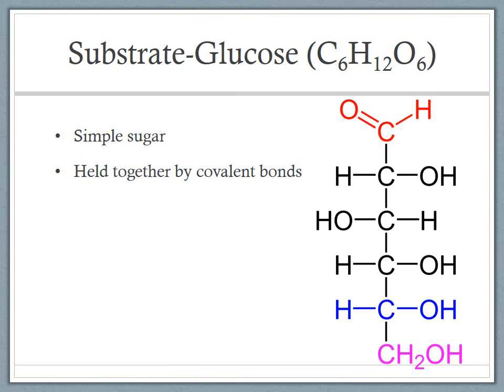Glucose is a carbohydrate — a simple sugar, even if it doesn't look simple. It is held together by covalent bonds. There are six carbons down the middle, with covalent bonds holding hydrogens and OH groups. These bonds will be broken throughout the different stages, and the energy held in those bonds will be transferred to ATP molecules, which will hold that energy and release it during cell activities.